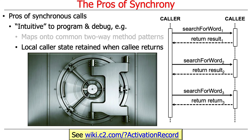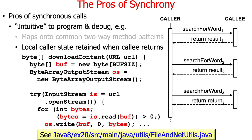Another nice thing is that the local state of the caller is retained in the activation record of the calling method, so that when the callee returns, the caller is able to access its state as it was when the call was made. Here's an example: the download content method has local variables like buff, OS for output stream, IS for input stream, bytes, and so on. All these variables are part of the runtime stack, and when method calls are made to things like reading, writing, or open stream, the state of these local variables is maintained so execution can pick up from where it left off.